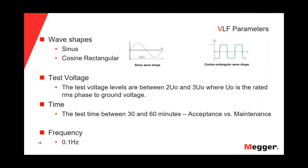The test voltage applied is between two times U0 and three times U0, where U0 is the rated RMS phase-to-ground voltage of the cable. The test time is between 3 and 60 minutes. There is some ambiguity between the European standards and the IEEE standard regarding test time. If we are doing a commissioning or acceptance test, we are looking mainly for workmanship issues or manufacturing defects — there is no way we have water trees in a new cable.